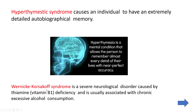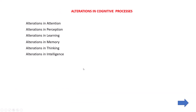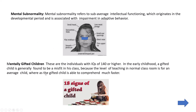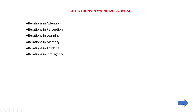Additionally in memory, hyperthymesia syndrome is over-remembrance of autobiographical details, and Wernicke-Korsakoff syndrome is caused by vitamin B1 deficiency, commonly seen in alcohol-addicted persons. In thinking, delirium and dementia are similar but delirium is acute with altered consciousness, while dementia is chronic with no change in consciousness. In intelligence, subnormal and gifted intelligence are both considered alterations. Thank you.